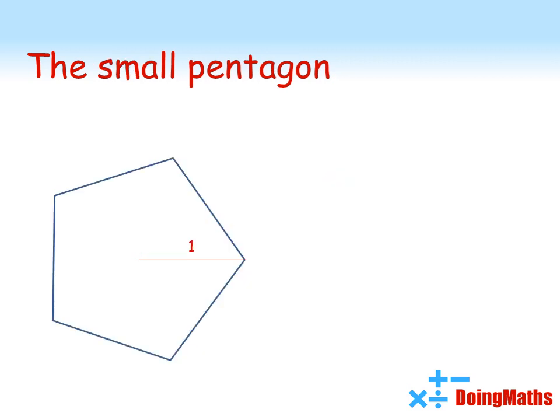Now let's find the area of the small pentagon. So this time the 1 goes from the center to a corner of the pentagon. Let's draw a similar line in from the center to the next corner, which must also be the same length. This is a regular pentagon.